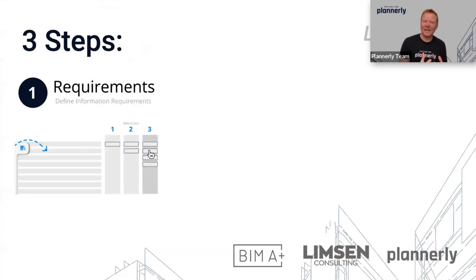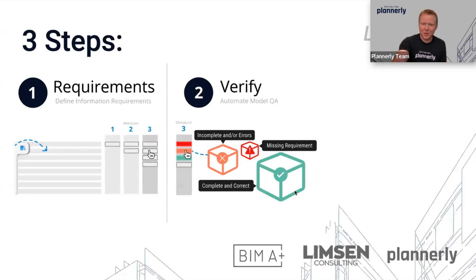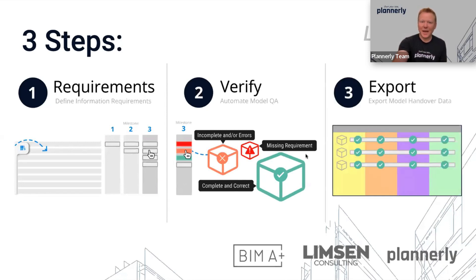What we have today is how those three steps incorporate templates for COBE requirements that can be packaged into a set of information requirements for your project for each milestone. Then we have a process for quality assurance that automates the model check against those requirements and tells you if things are incomplete or if there are missing requirements. And we also have an export integrated into this workflow that can enable you to automate this process a lot more than the manual work of creating lots of spreadsheets.